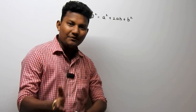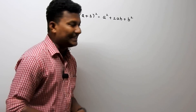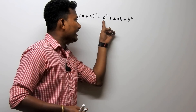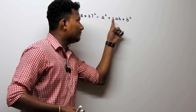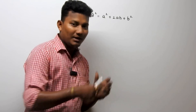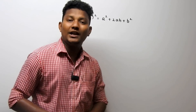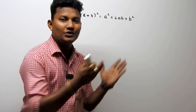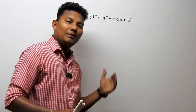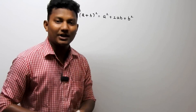Good morning everyone. I am back with some new video tricks. Today we are going to see the formula (a + b) whole square, which equals a squared plus 2ab plus b squared. I am going to prove this formula by using some shapes and geometrical concepts.